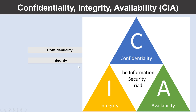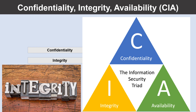What about Integrity? Integrity refers to keeping data or messages correct. When you send an email message, you want to make sure that the message received is the same as the message you have sent. When you store data in a database, you want to be sure that the data you retrieve is the same as the data you have stored. Encrypting data keeps it confidential, but you must then be able to decrypt it so that it's the same as before it was encrypted. Integrity is having confidence that data hasn't been tampered with or altered.